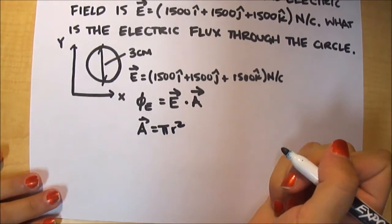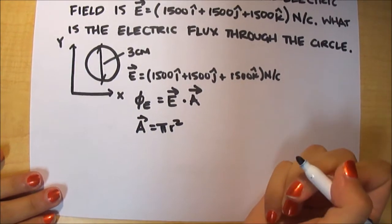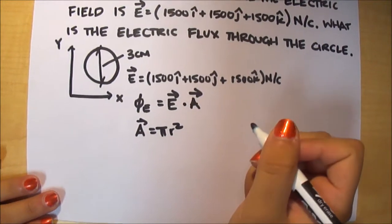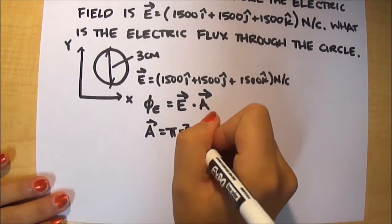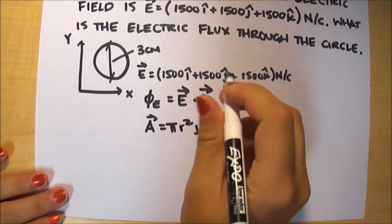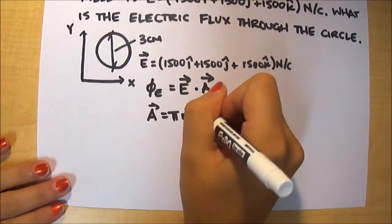And since the area lies on the xy plane, the area vector is going to be perpendicular to the xy plane, which means it's going to have a k-hat vector.